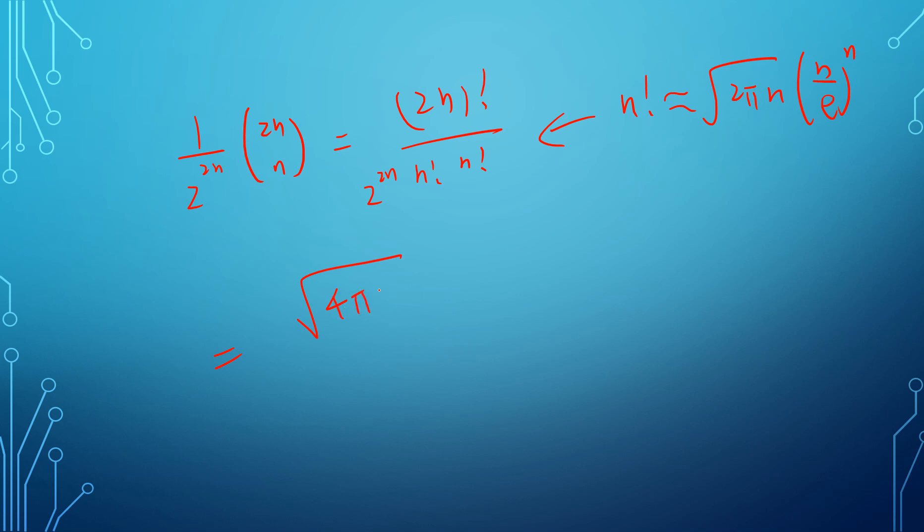We get square root of 4 pi n times 2n over e to the 2n, divided by 2 to the 2n. We have two square root of 2 pi n, so that's 2 pi n, and then we have n to the n but two of them.